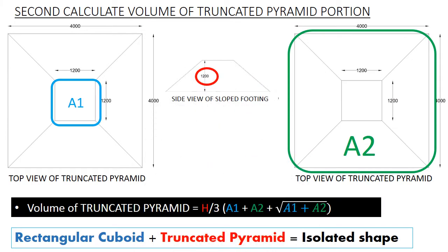Now let's see the formula for volume of a truncated pyramid. The volume of the truncated part is equal to: height divided by 3, multiplied by the bracket containing area of top rectangle (A1), plus area of bottom rectangle (A2), plus the square root of (A1 multiplied by A2), bracket close.